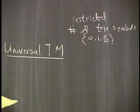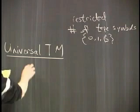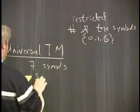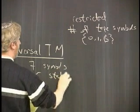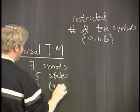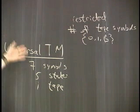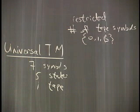Just for some interest, you can write a universal Turing machine with seven symbols on your alphabet, five states, and one tape. Do that for homework. I don't know what it looks like, but there are universal Turing machines that have just this simple structure.